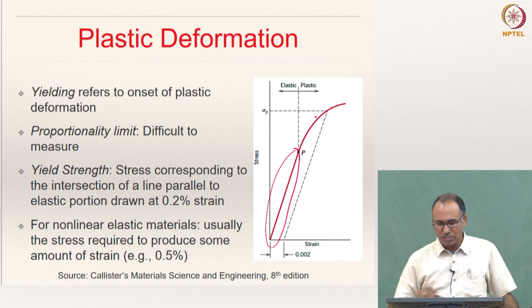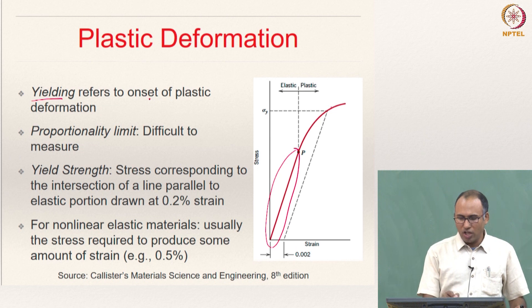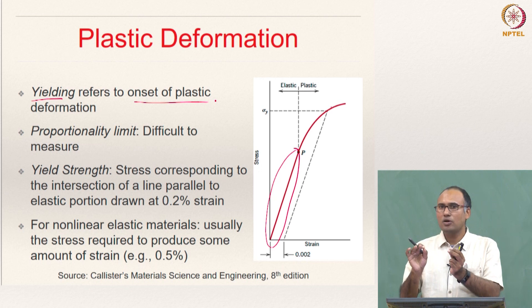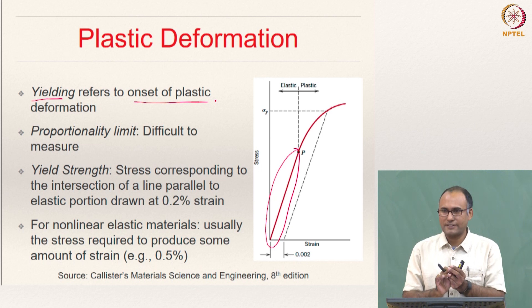This is also called yielding. Yielding refers to the onset of plastic deformation — the point at which your plastic deformation starts is what you call the onset of yielding or onset of plastic deformation, and that point is called the yield point.